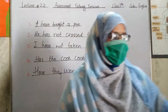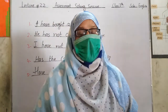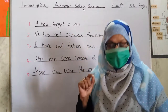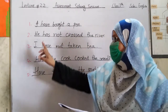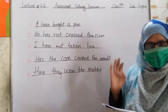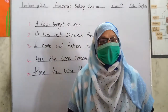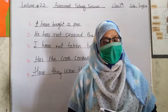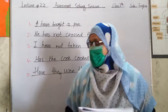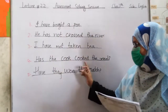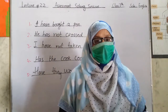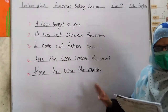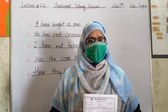Question 4: Translate the following Urdu sentences into English. First: 'میں قلم خرید چکا ہوں' — I have bought a pen. Second: 'اس نے دریا عبور نہیں کیا' — He has not crossed the river. Third: 'میں چائے نہیں پی چکا ہوں' — I have not taken tea. Fourth: 'کیا باورچی نے کھانا تیار کر لیا ہے؟' — Has the cook cooked the meal? Fifth: 'کیا انہوں نے میچ جیت لیا ہے؟' — Have they won the match?